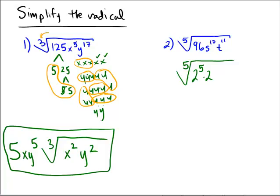S to the 10th can be viewed as S to the 5th times S to the 5th, and T to the 11th can be viewed as T to the 5th, T to the 5th, and then one extra copy of T. So I'm reducing things by breaking them down into alternate powers. Powers of 5 in particular, because it is a 5th radical prison.